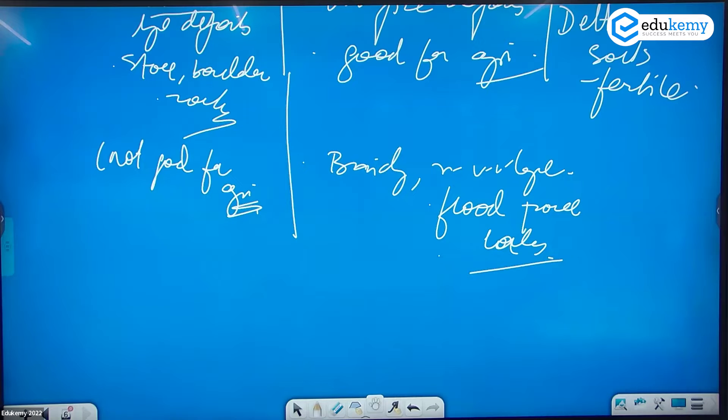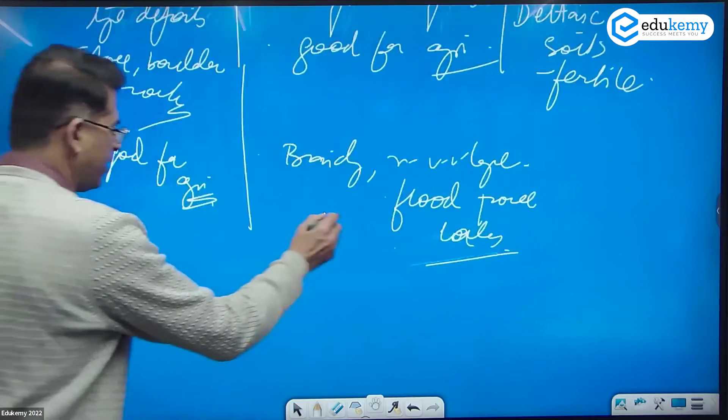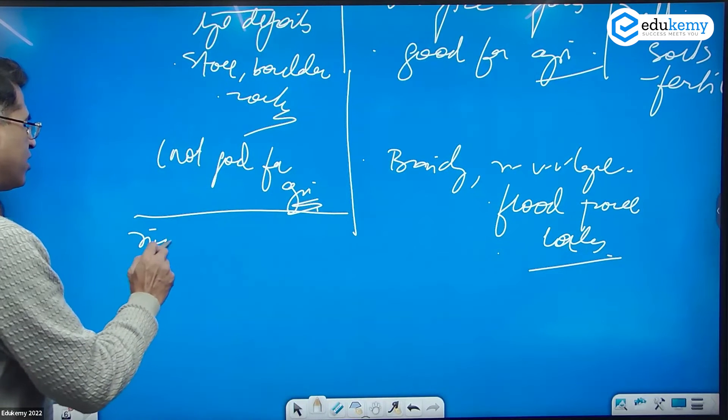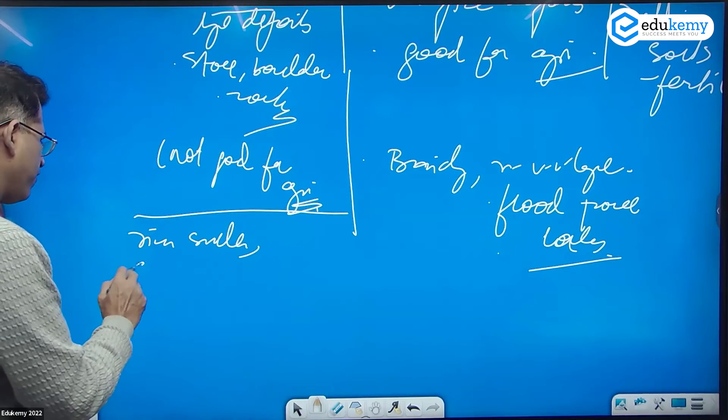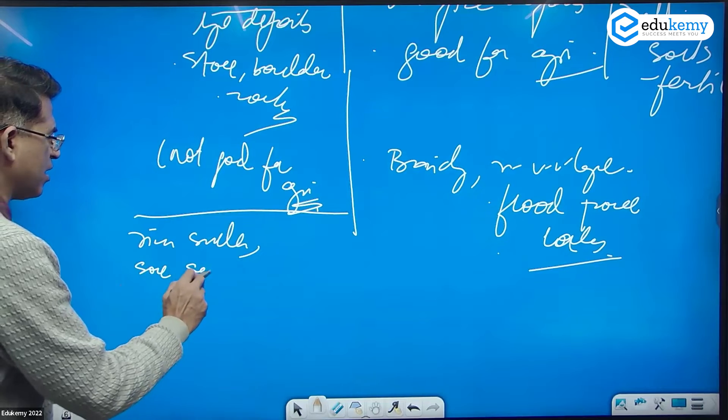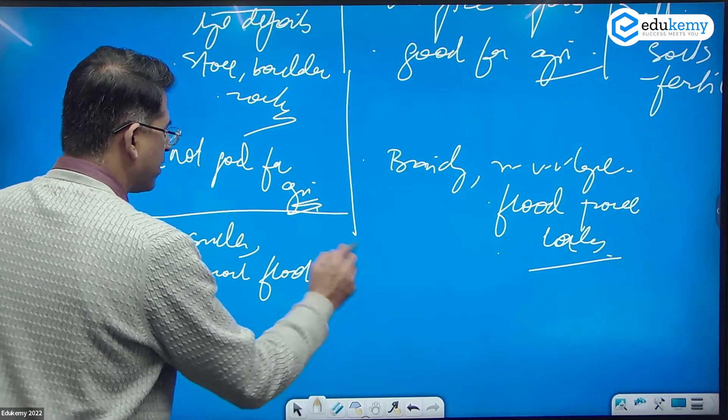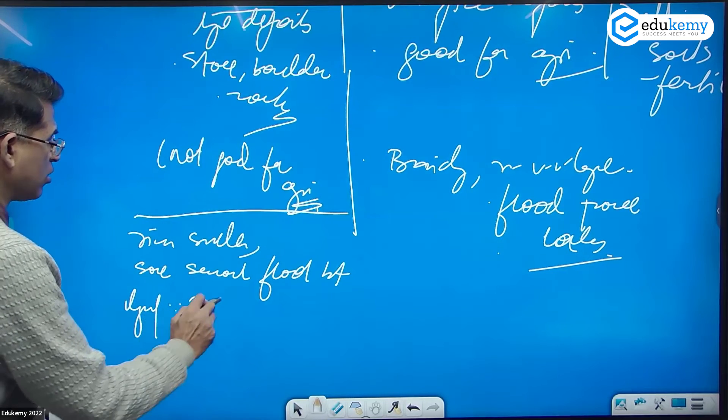Whereas the Bhabba regions generally have smaller rivers. They might have some seasonal floods, but largely because of high porosity, the rivers are not visible.